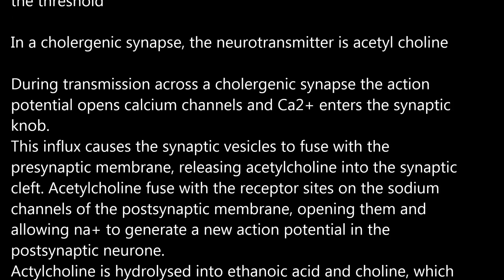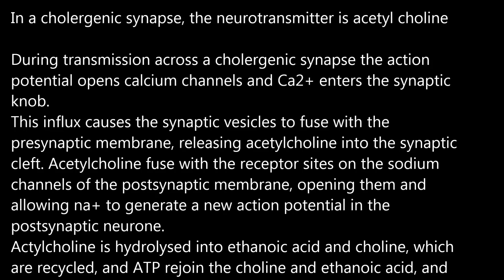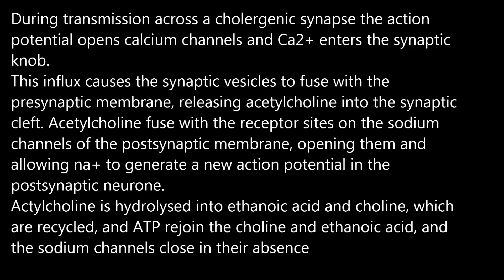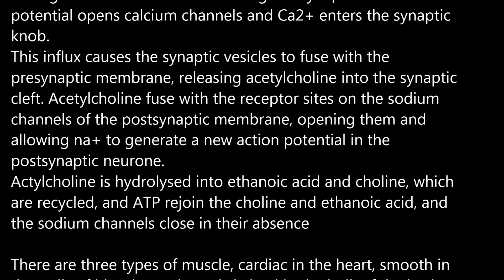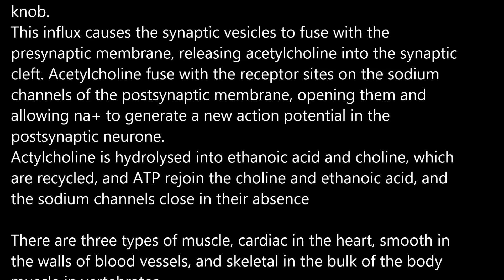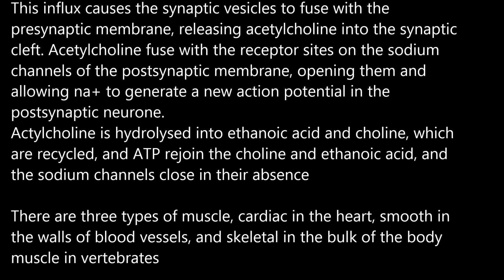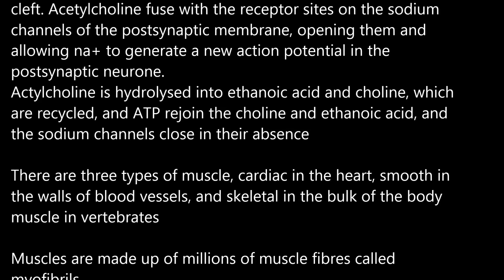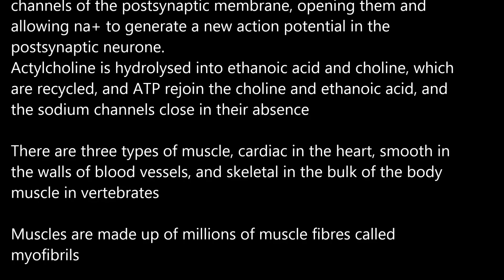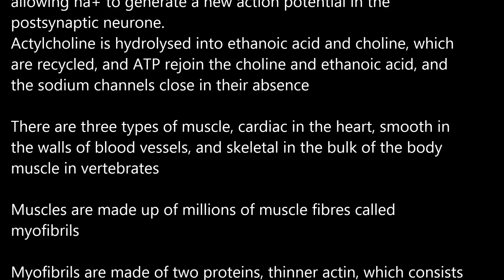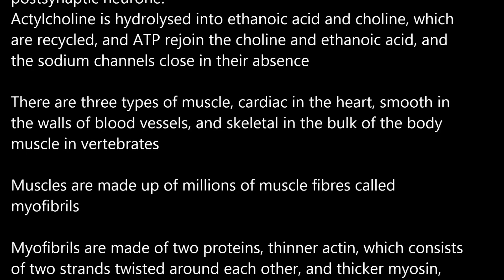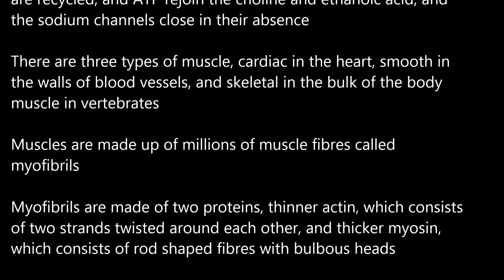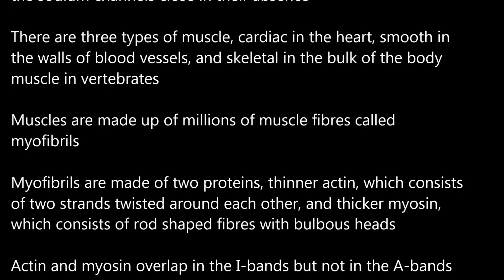During transmission across a cholinergic synapse, the action potential opens calcium channels and Ca2+ enters the synaptic knob. This influx causes the synaptic vesicles to fuse with the presynaptic membrane, releasing acetylcholine into the synaptic cleft. Acetylcholine binds with the receptor sites on the sodium channels of the postsynaptic membrane, opening them and allowing Na+ to generate a new action potential in the postsynaptic neuron. Acetylcholine is hydrolysed into ethanoic acid and choline, which are recycled, and ATP rejoins choline and ethanoic acid, and the sodium channels close in their absence.